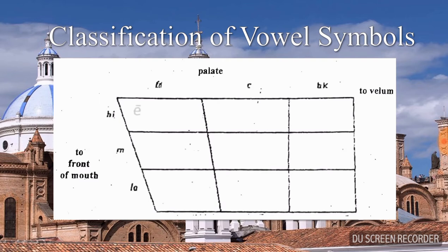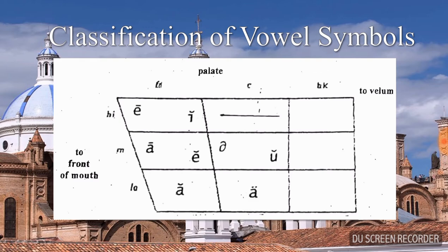In high front, we have long E as in 'sheep' and short I as in 'it'. In mid front, we have long A as in 'came' and short E as in 'met'. In low front, we have short A as in 'ant'. In high center, we don't have any vowel symbol. In mid center, we have schwa as in 'the' and stressed schwa as in 'some'. In low center, we have Spanish A as in 'hot'. In high back, we have short U as in 'could' and long U as in 'shoot'. In mid back, we have long O as in 'go', and in low back, we have open O as in 'all'.